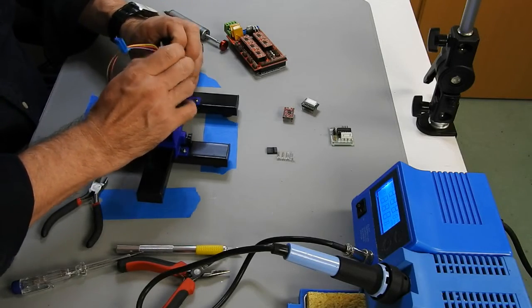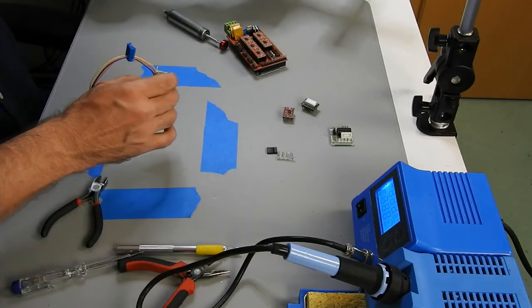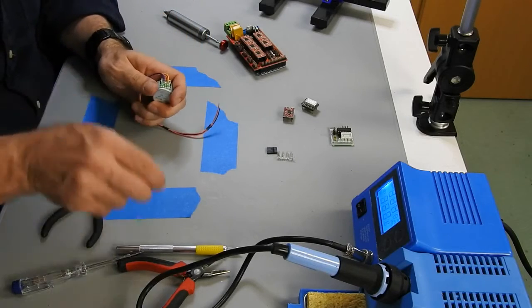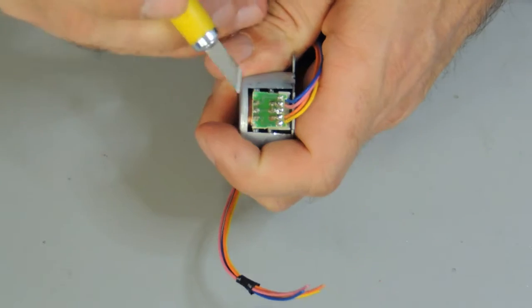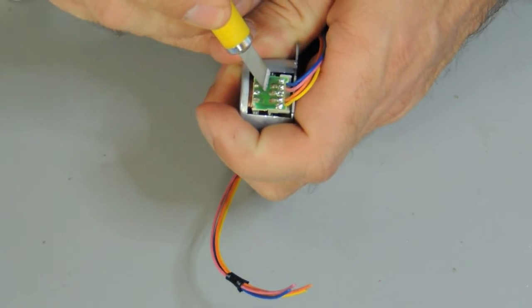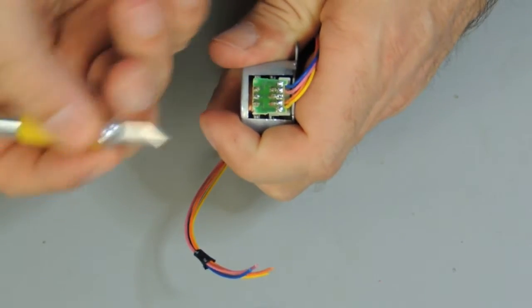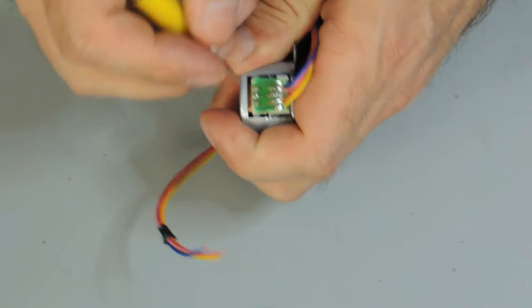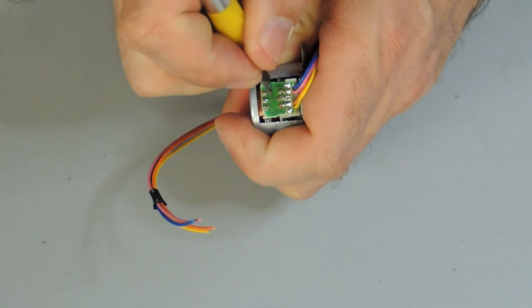One more thing we need to do is we have to cut off a trace that is right here in the middle. Use this sharp knife, be careful not to hurt yourself or injure yourself.